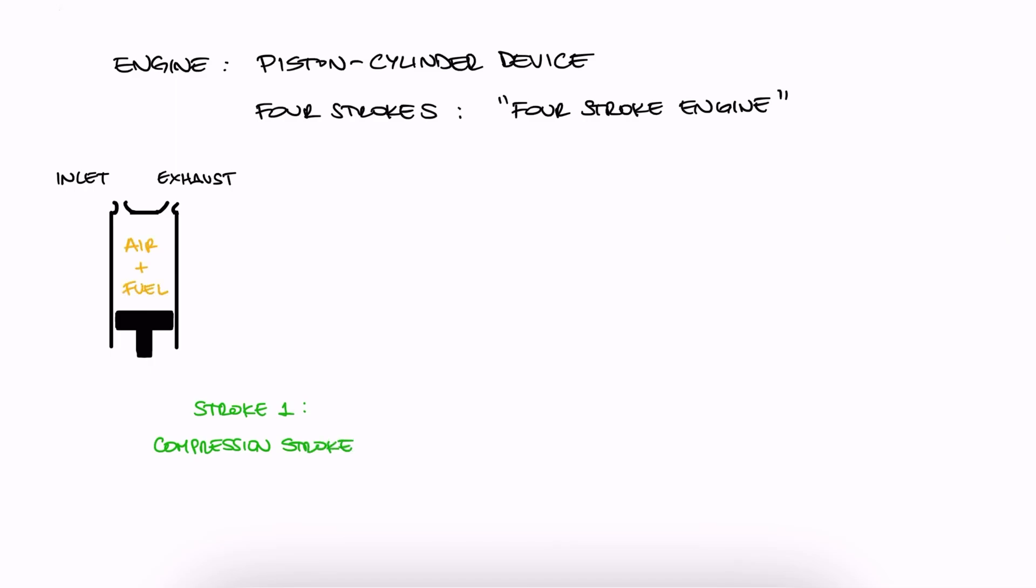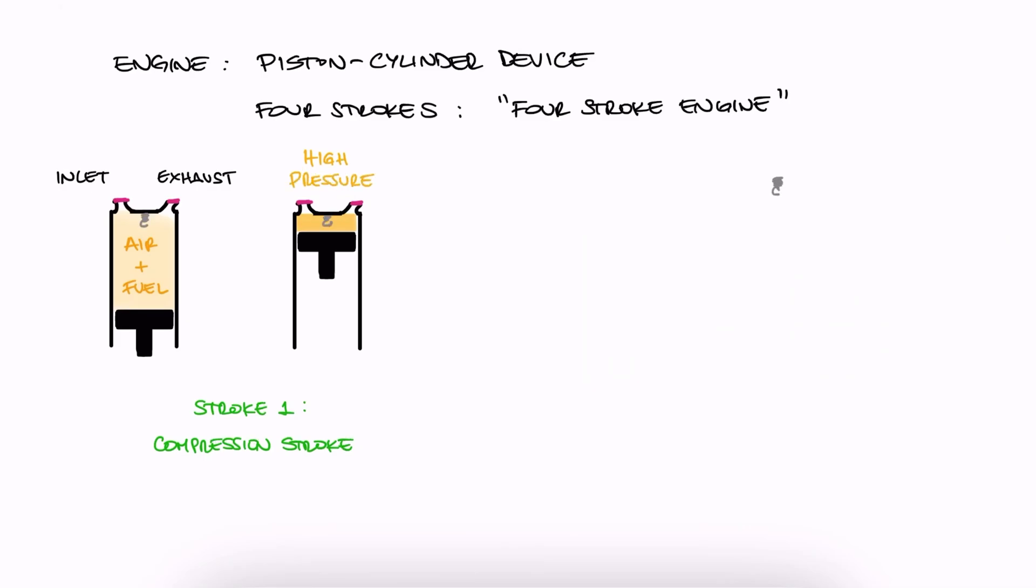During the first stage, while both openings are closed, the piston moves up, compressing the mixture and raising its pressure. At the top of the cylinder, we have a spark plug.